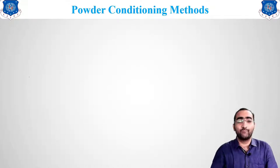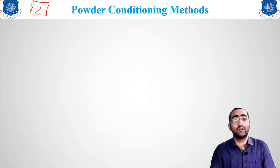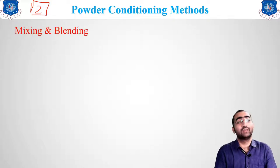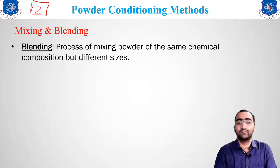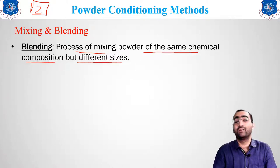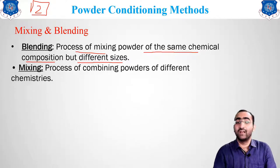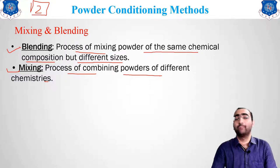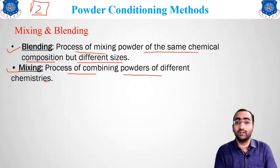Now we move to the second step of powder metallurgy — powder conditioning. Powder conditioning is of two types: mixing and blending. Blending is the process of mixing powder of the same chemical composition but different sizes. Mixing is the process of combining two different powder chemistries. So for alloys we use mixing, and for pure metals we use blending. The basic difference: mixing involves two different metals; blending uses the same metal in different sizes.